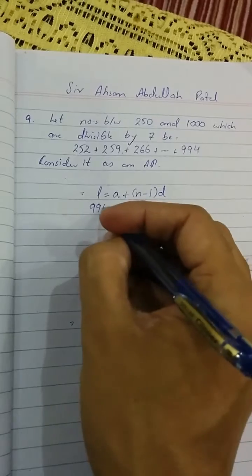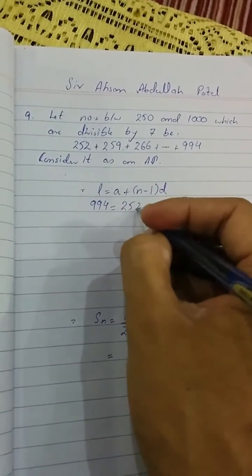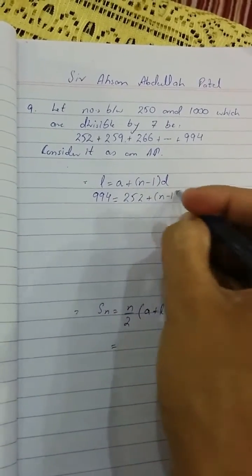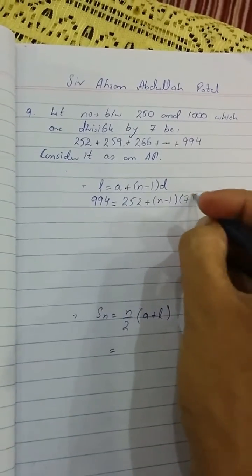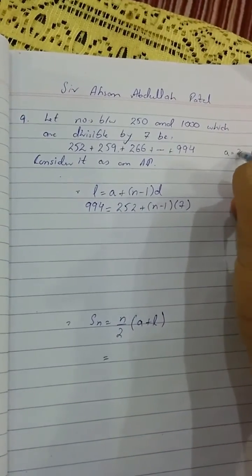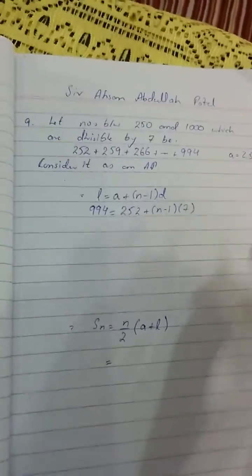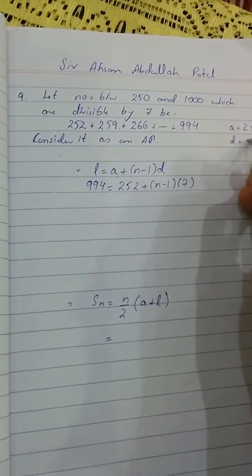Our last term is 994, a is 252, n is unknown, and d is 7. Let's write the data: a = 252 (that is first term), d = 7 (the common difference), last term l = 994.